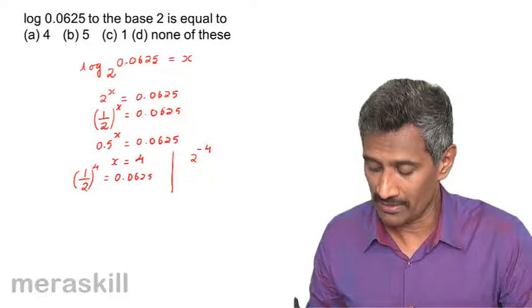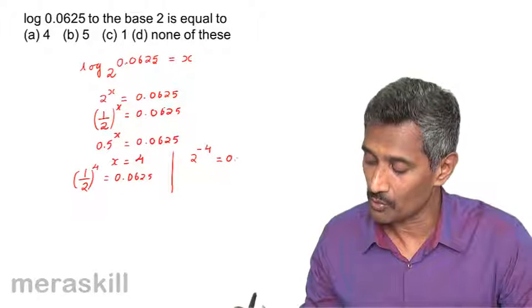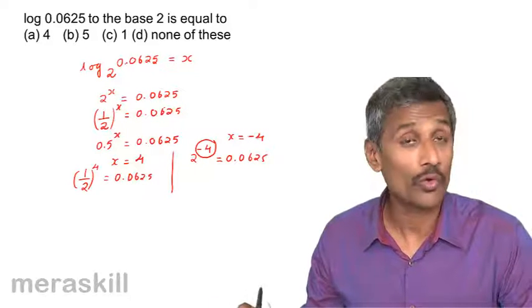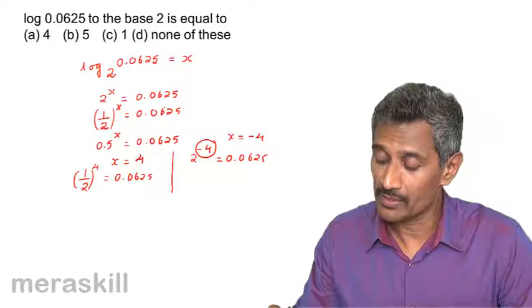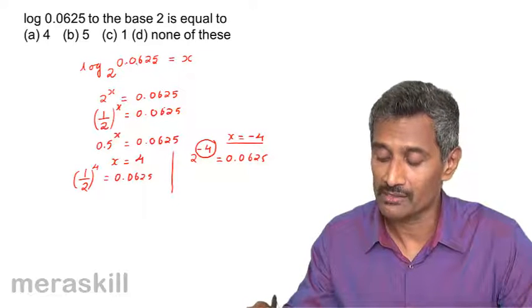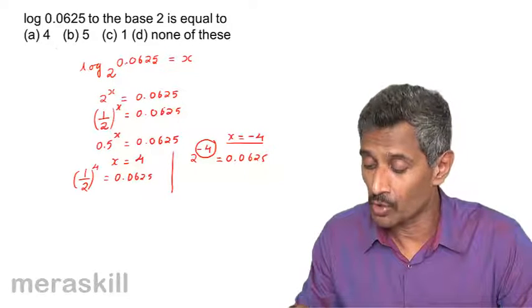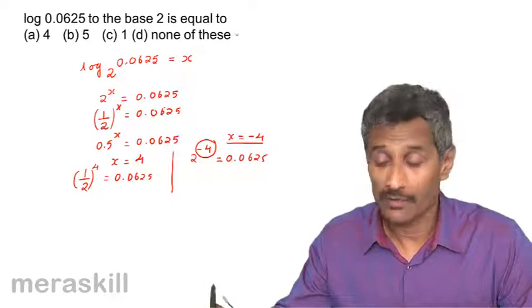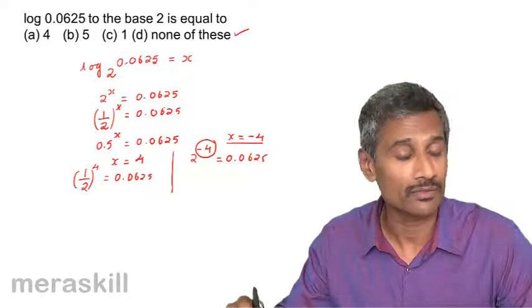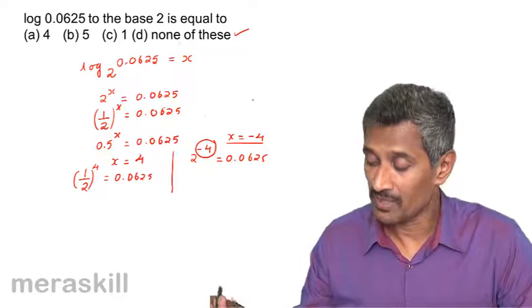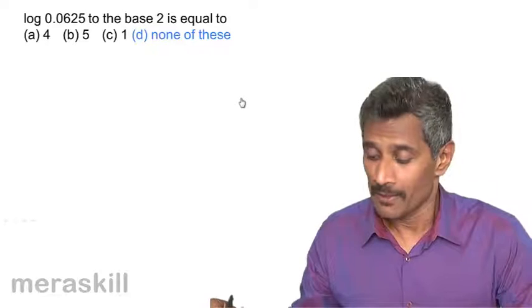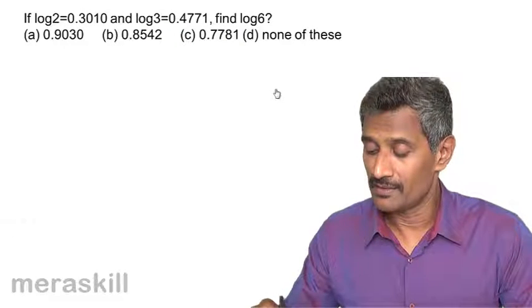So (1/2)⁴ = 0.0625, which means 2^(−4) = 0.0625. Therefore x = −4, so log 0.0625 to the base 2 is −4. Since the answer is negative, positive options like 4 or 5 cannot be correct.